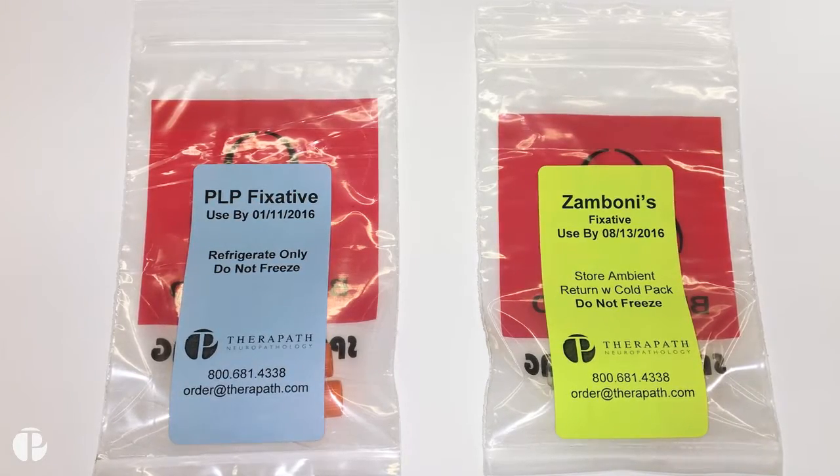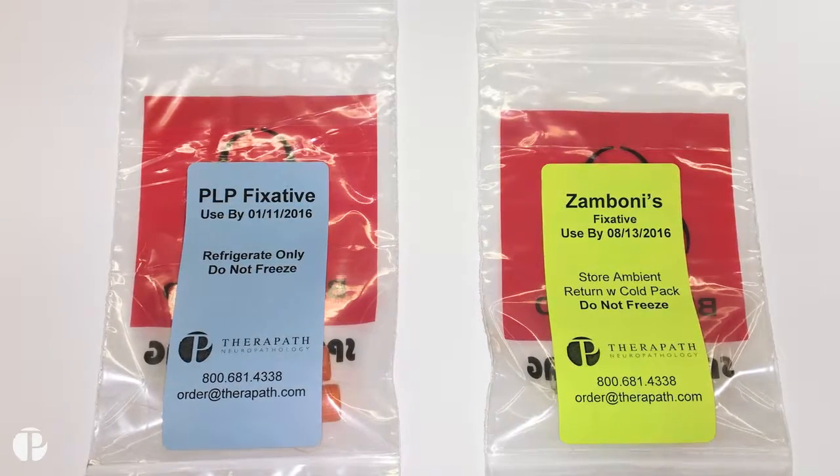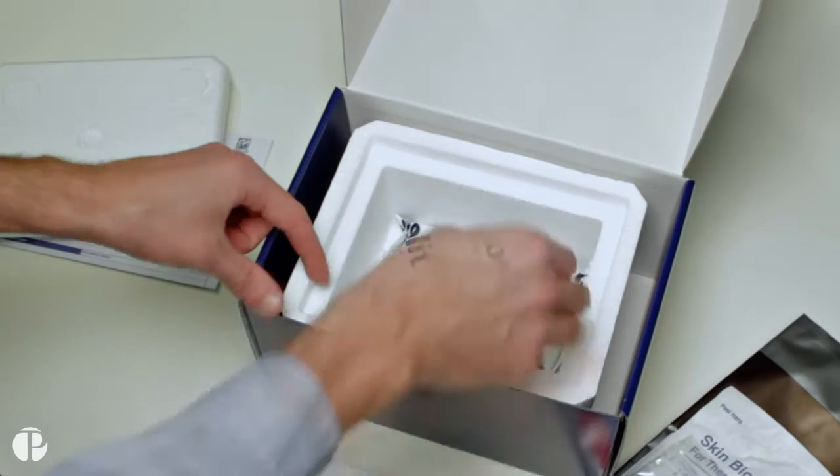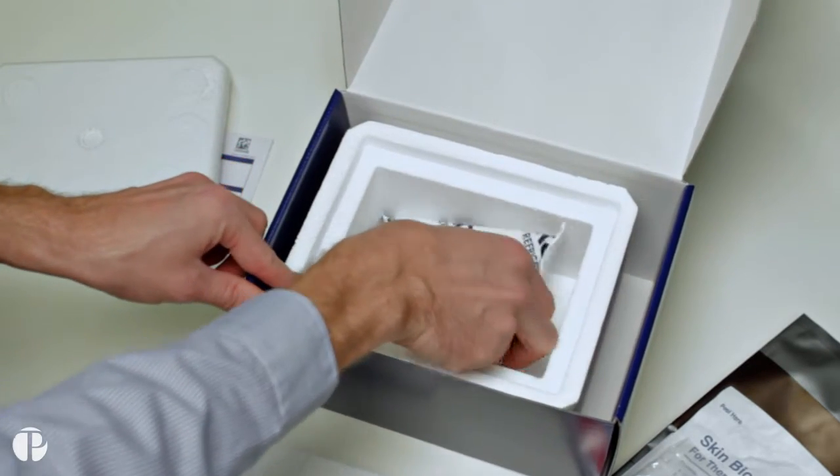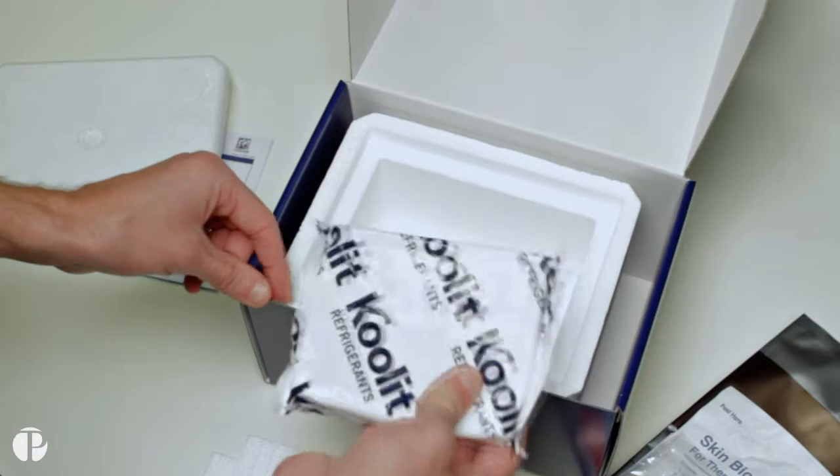Zamboni's fixative is good for up to one year and can be stored at room temperature. At the bottom of the cooler is an ice pack that needs to be frozen for the return shipment. The other components should be stored at room temperature until needed.